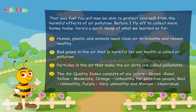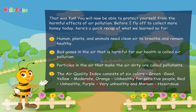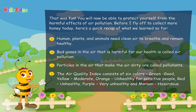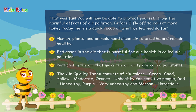Particles in the air that make the air dirty are called pollutants. The air quality index consists of six colors: green — good; yellow — moderate; orange — unhealthy for sensitive people; red — unhealthy; purple — very unhealthy; and maroon — hazardous.